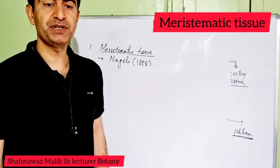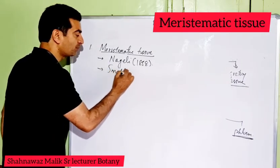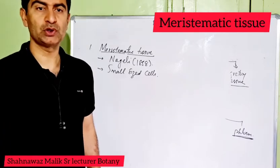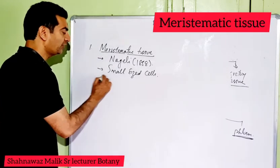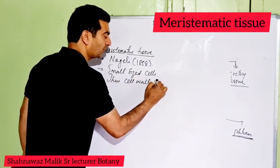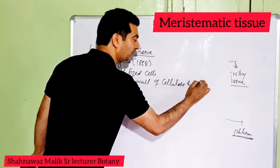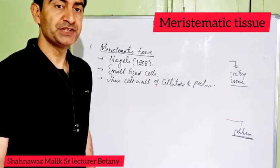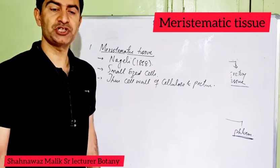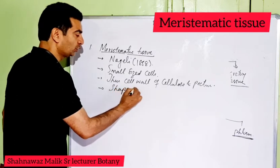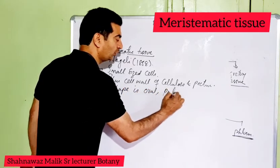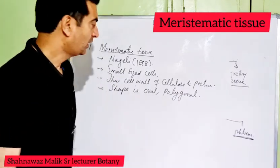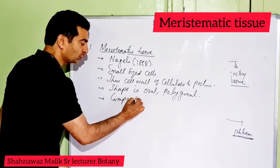When we study the characteristics of meristematic cells: these cells are small-sized. They have a thin cell wall made of cellulose and pectin. They may be of different shapes — oval-shaped or polygonal in shape. Meristematic tissues are compactly arranged.